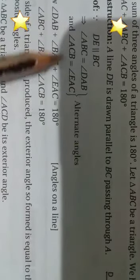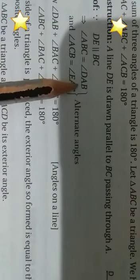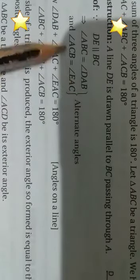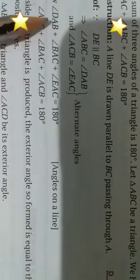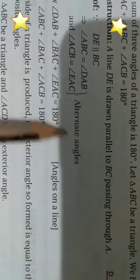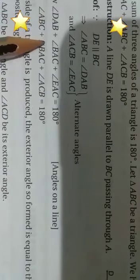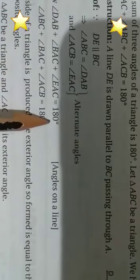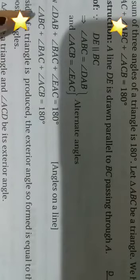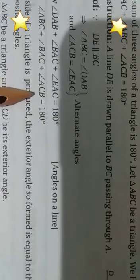In the proof part: since DE is parallel to BC, angle ABC equals angle DAB and angle ACB equals angle EAC by alternate angles. Also, angle DAB plus angle BAC plus angle EAC equals 180 degrees — angles on a line. Therefore, angle ABC plus angle BAC plus angle ACB equals 180 degrees.